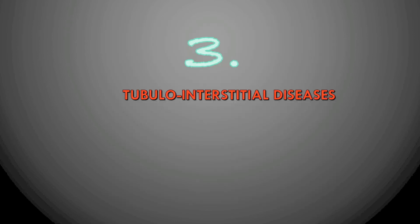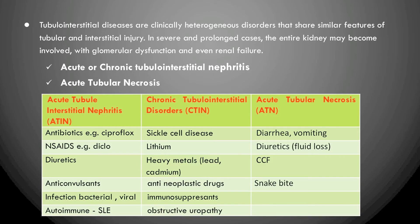Tubulo-interstitial diseases are diseases of the PCT, DCT, and interstitial cells. They are a collection of disorders sharing tubular and interstitial injury, divided into acute and chronic tubulo-interstitial nephritis, and acute tubular necrosis.